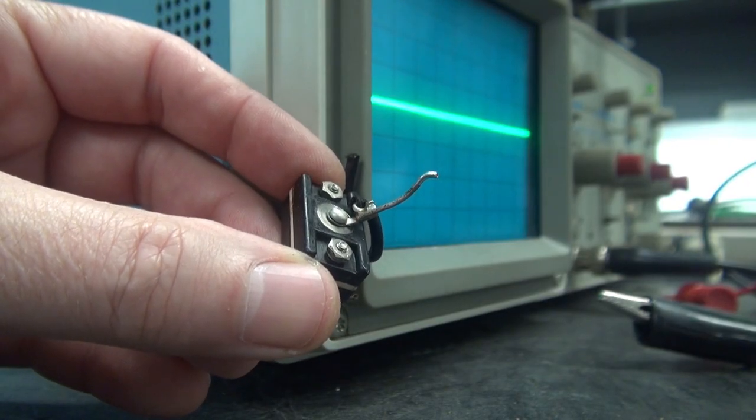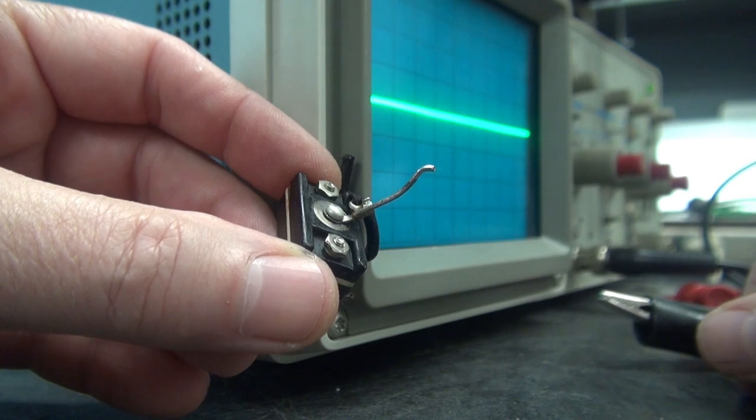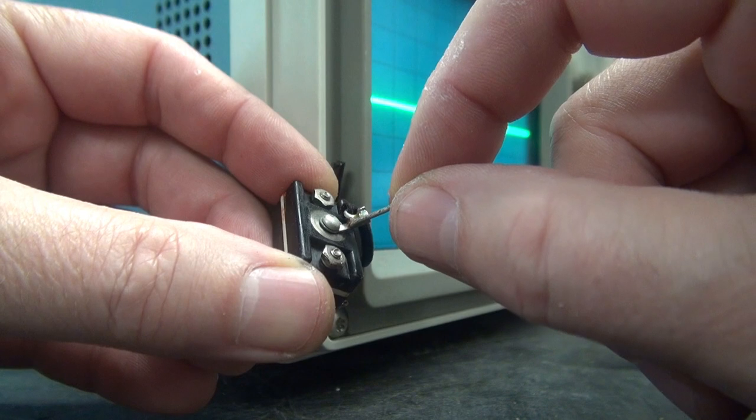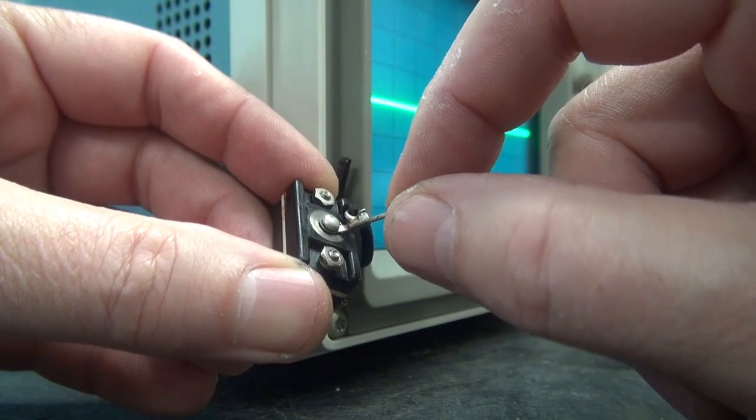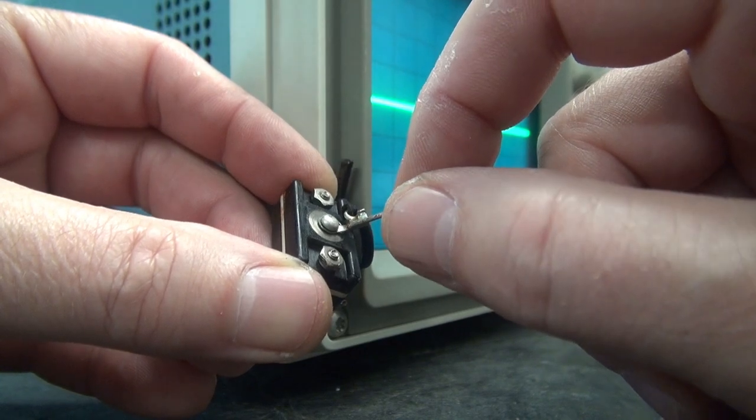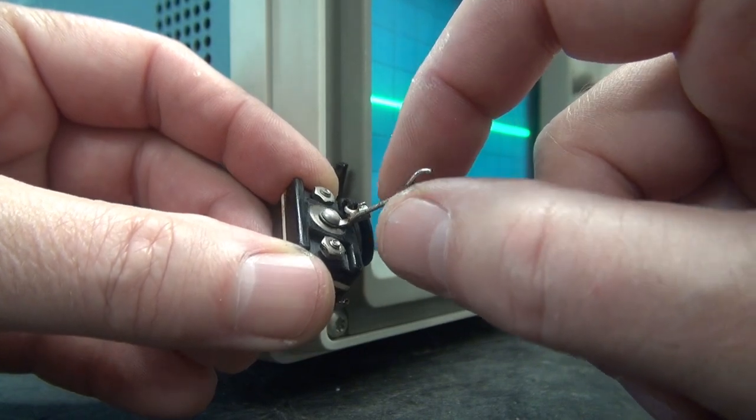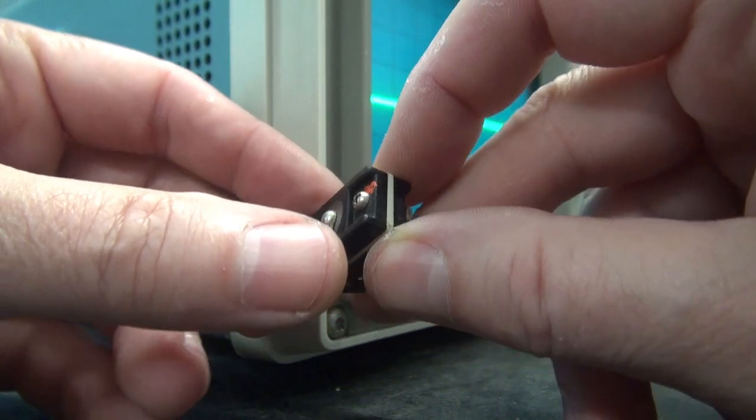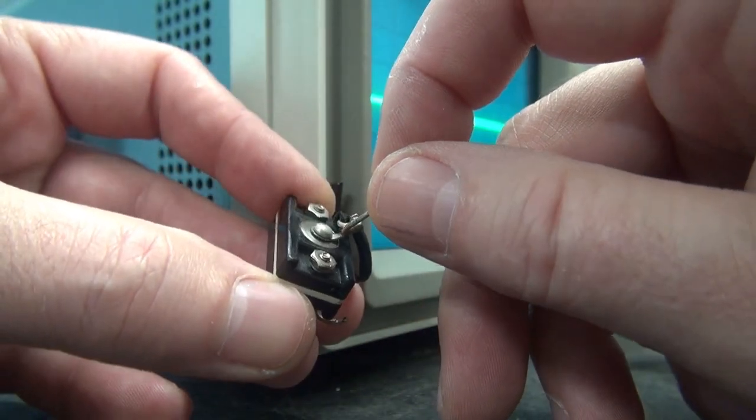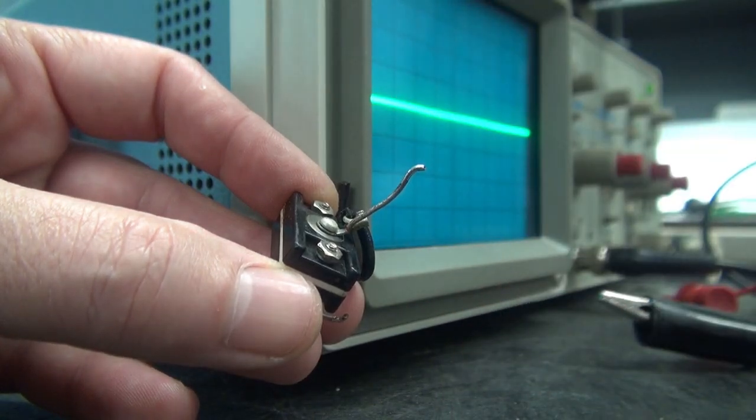All right, a little bit of follow up. I removed the crystal from the receiver. Sure enough, we've got a loose lead. It looks like there's some type of a little push in rivet. I don't know how it got that loose. The other side is not like that. So I'm going to see if I can possibly repair this. If not, I'm going to put in that other crystal.